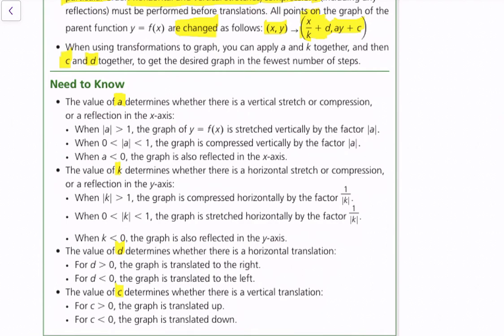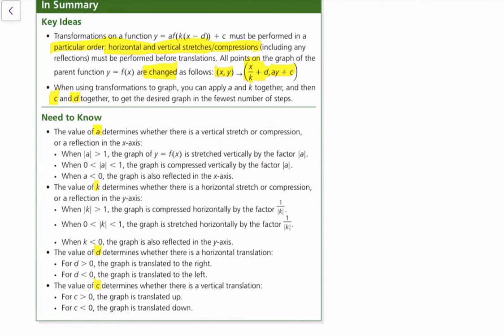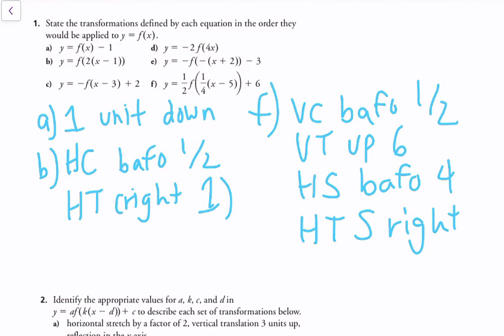That's pretty straightforward — it might be a lot to understand when you first see it, but you should be familiar with it from Grade 11 functions. Let's go into some examples: state the transformations defined by each equation in the order they would be applied to y equals f of x. For part a, y equals f of x minus 1 — this is a vertical translation one unit down. For part b, y equals f of 2 times x minus 1 — first, there's a horizontal compression by a factor of 1 over 2, because for horizontal stretches or compressions it's always 1 over the given value. Then there's a horizontal translation right 1 unit, because putting in x equals 1 makes the entire argument equal 0.